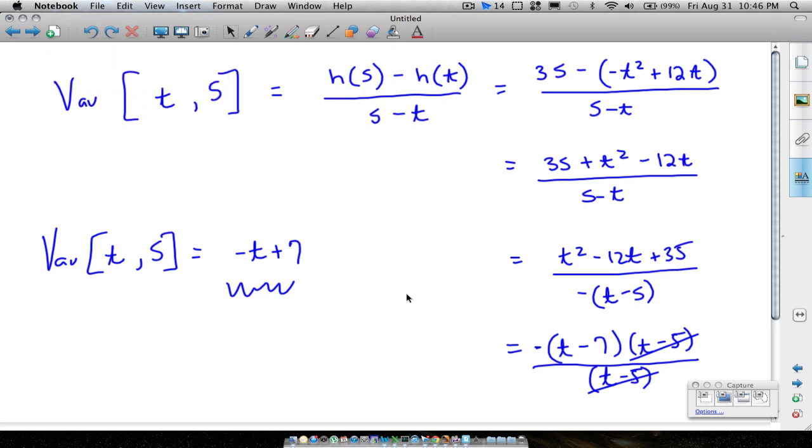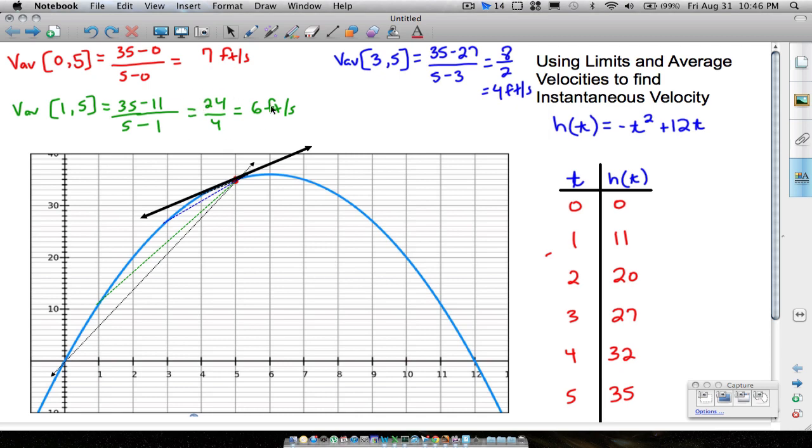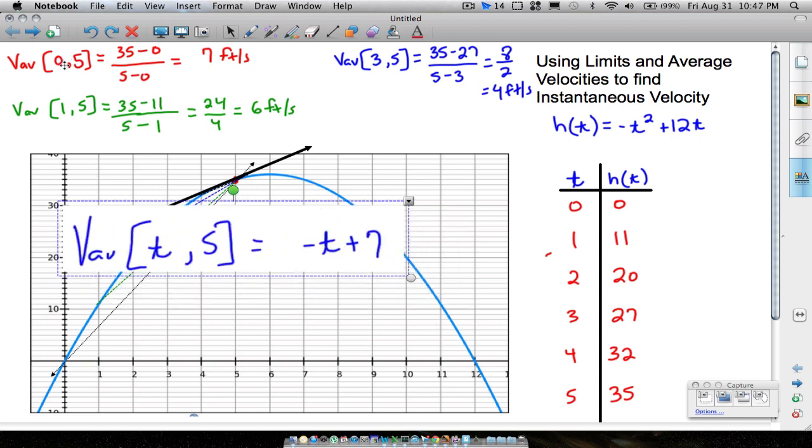I'm going to take this back to the front page. And all these average velocities we found at the beginning, let's see if it works. So here's our formula for average velocity. The t value we had here was 0. So take 0 and plug it into that thing, negative 0 plus 7, look at that, 7 feet per second.